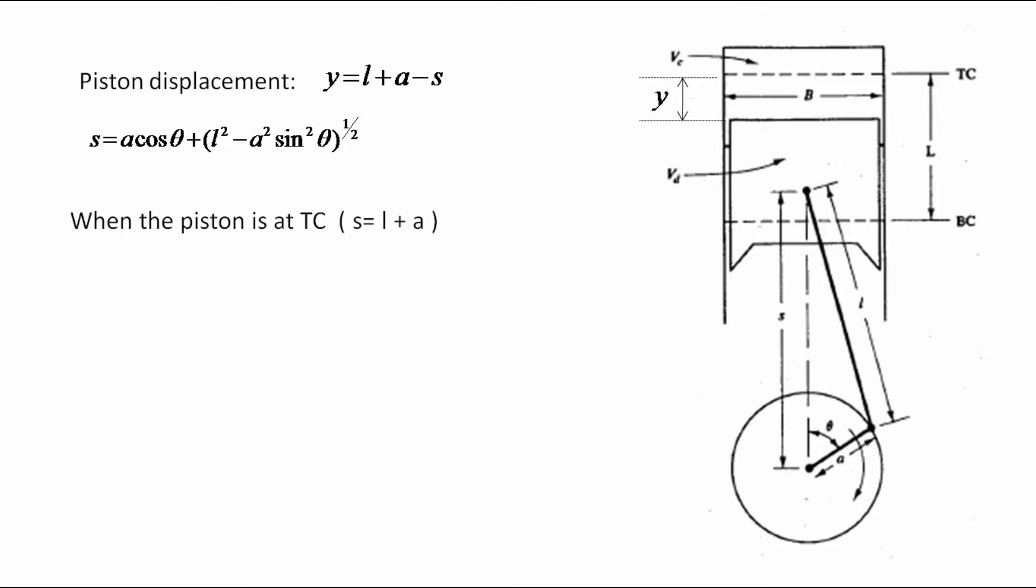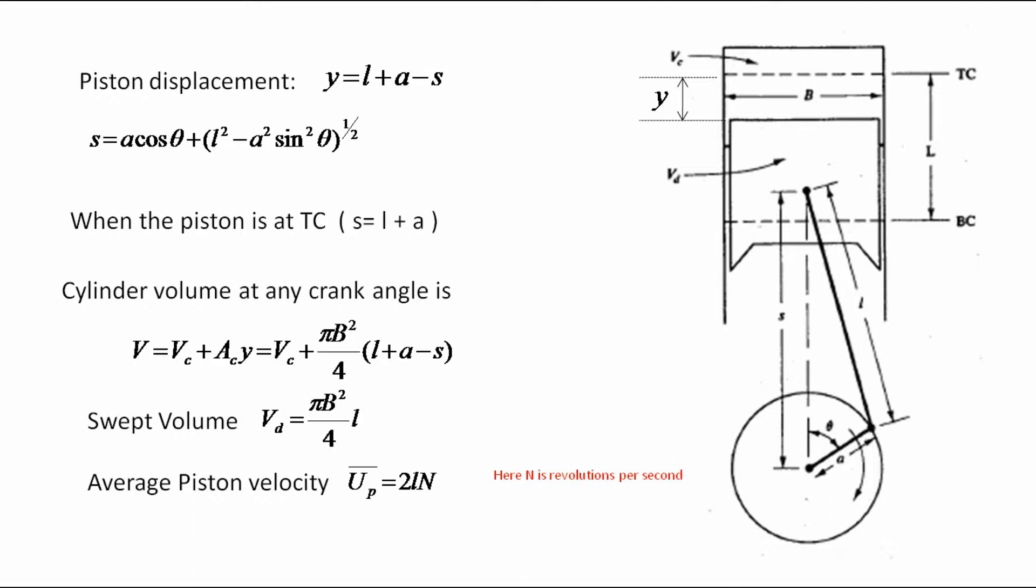When piston is at TDC, s is equal to l plus a. Cylinder volume at any crank angle is v equal to vc plus ac into y, which can be further simplified as vc plus pi b square by 4 into l plus a minus s. Swept volume vd is equal to pi b square by 4 into l. And average piston velocity up bar is equal to 2ln.